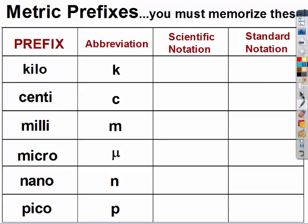The prefixes that we'll be using in chemistry are these on the left. Kilo is abbreviated k, and it's 1 times 10 to the 3rd of whatever you're talking about, or 1,000. So there's 1,000 grams in a kilogram.